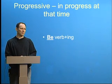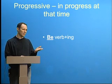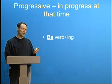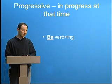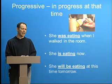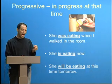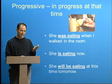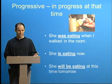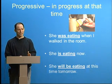Now if we look at the progressive aspect, progressive means in progress at that time. We can recognize progressive as some form of the verb be plus verb-ing — be could be am, is, or are, or was, or were. So if we look here, I have the sentence: she was eating when I walked in the room. The action was in progress at that time — was eating. The action started before and was in progress at that time in the past. And my second sentence: she is eating now — is eating is in progress right now.